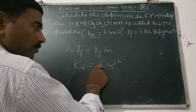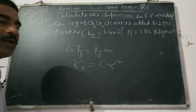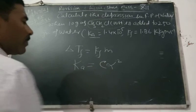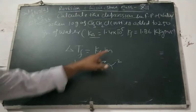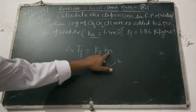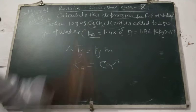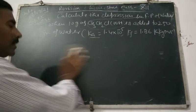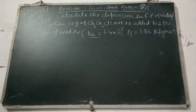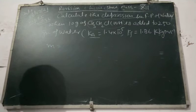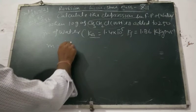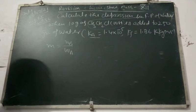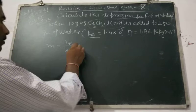C भी हमको calculate करना है, degree of dissociation भी calculate करना है। C का मतलब क्या? Concentration. यहाँ पर देखिए, molality भी concentration का ही term है। तो इस question में सबसे पहले हम solution की molality find करेंगे। Molality of solution को हम small m से indicate करेंगे। m = (weight of solute / molar mass) / weight of solvent in kg।